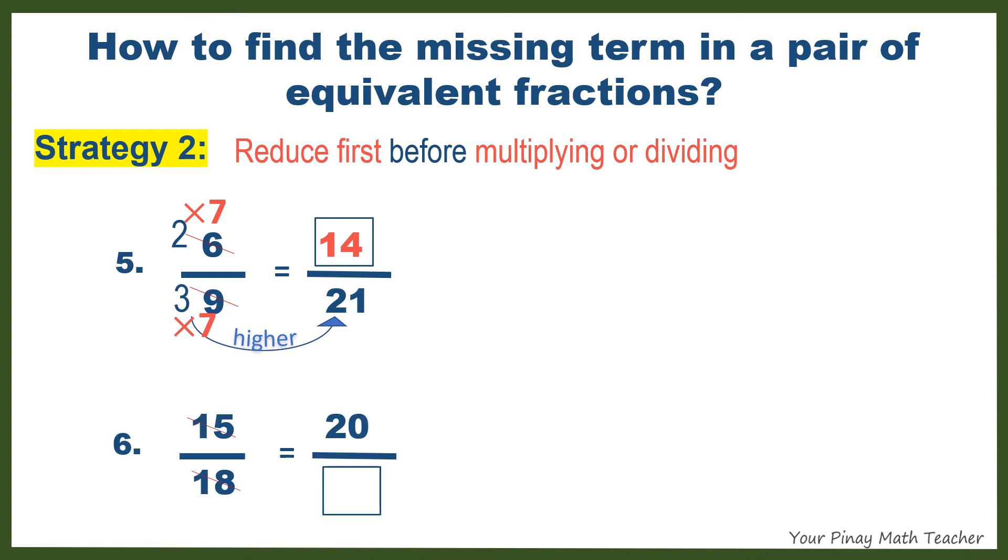Number 6. 15 and 18 can also be reduced by 3, and the reduced form is 5 over 6. 5 gets higher to 20. So we have to multiply 5 by a certain number to get 20, and that number is 4. Do the same with 6. So the missing term is 24.